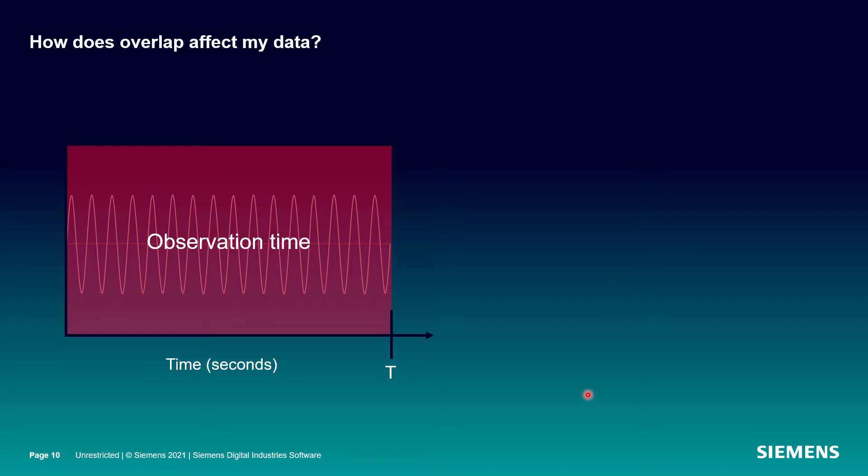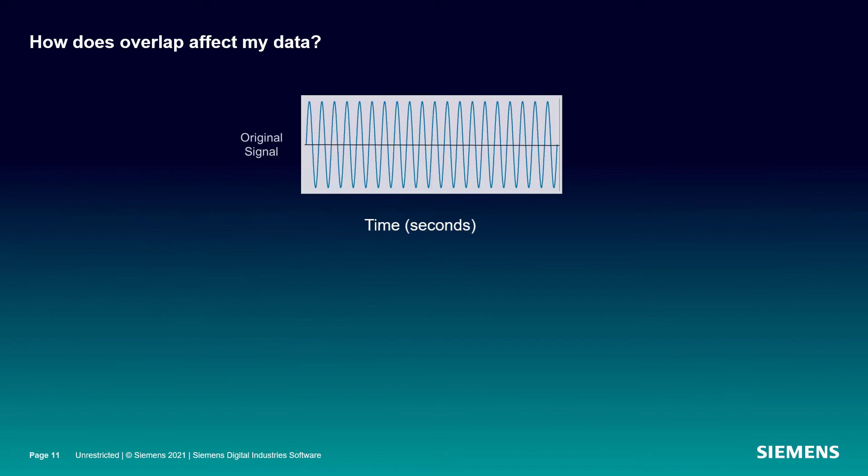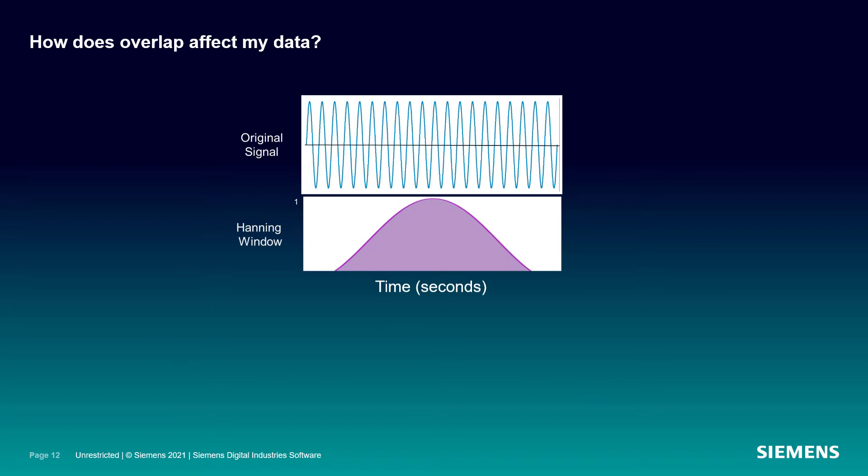So how does this affect my data? The other thing that's going on is every time we have an observation time measurement in the time domain, we should also be applying a window and we do this to reduce spectral leakage. In this case, I'm showing a Hanning window, but the principle is the same for almost all windows. And we do this so that our signal is periodic within our observation time T.